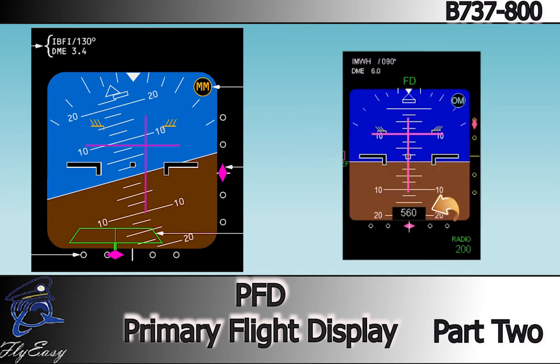The current radio altitude is displayed in the bottom center of the Attitude Indication Area when radio altitude is below 2,500 feet AGL. The radio altitude display turns amber when below the selected radio altitude minimums.